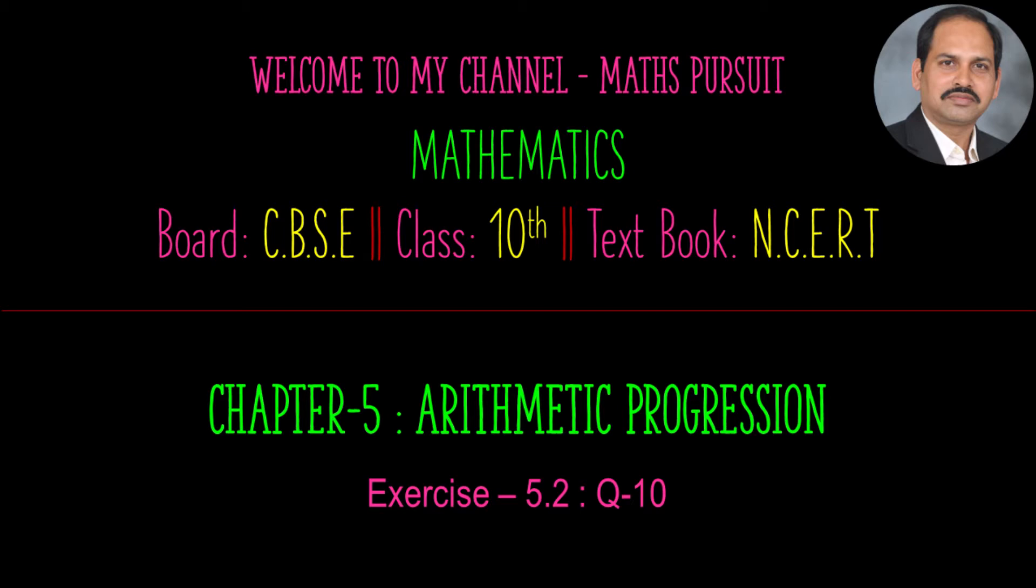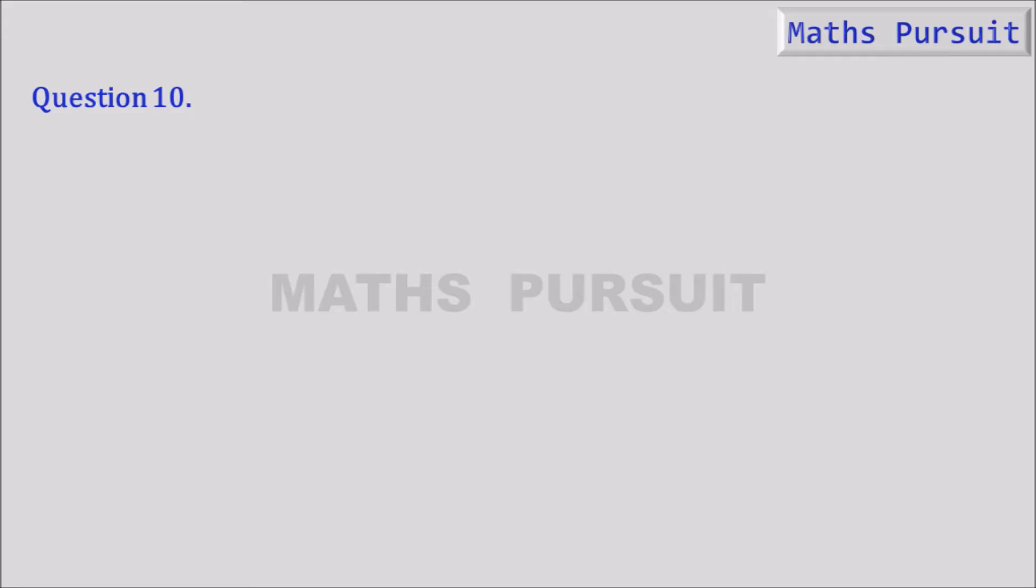So let's see what exactly is given in question number 10. Moving on to question number 10, it is given that the 17th term of an AP exceeds its 10th term by 7. Find the common difference.